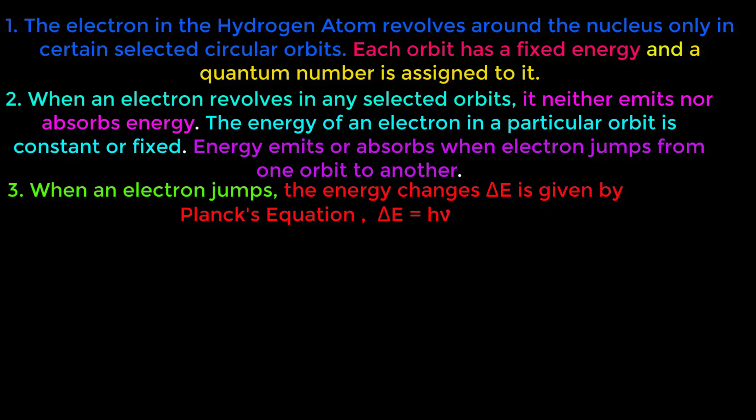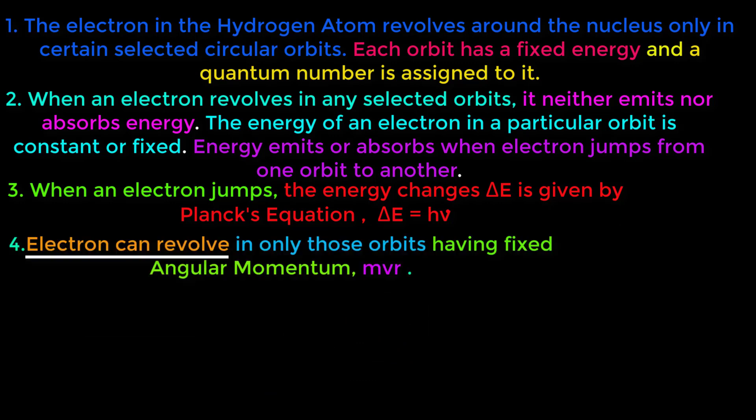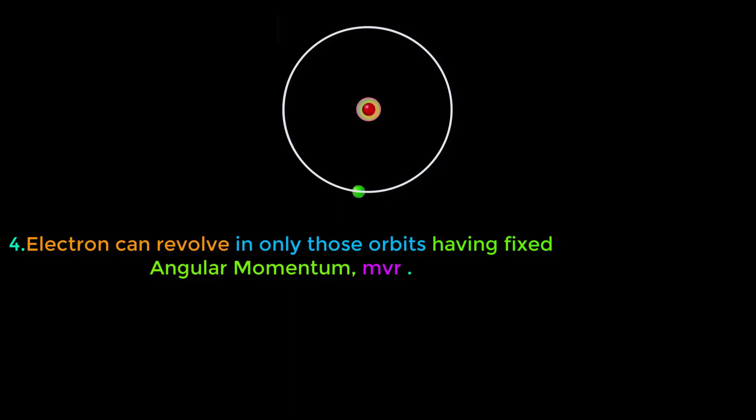The fourth postulate of Bohr atomic model is: electron can revolve in only those orbits having fixed angular momentum, MVR. MV is linear momentum and MVR is angular momentum. When electron moves in a circle then it is called angular momentum.